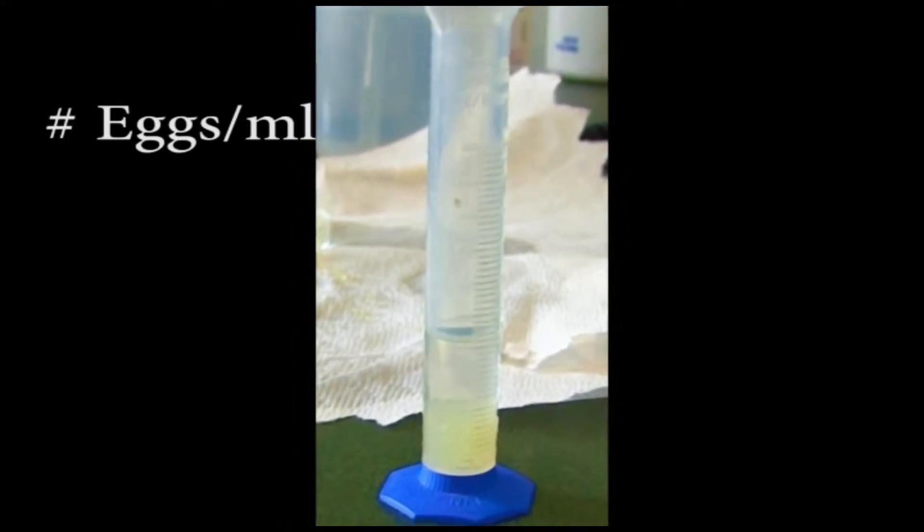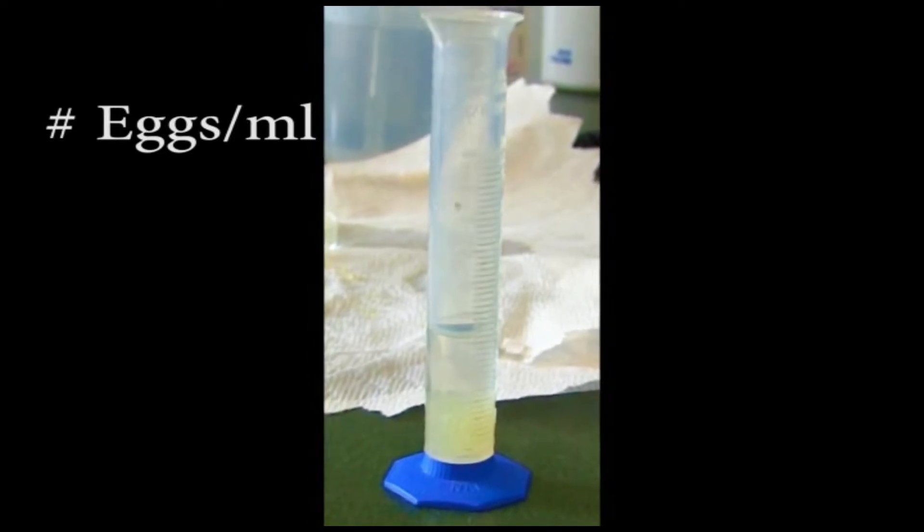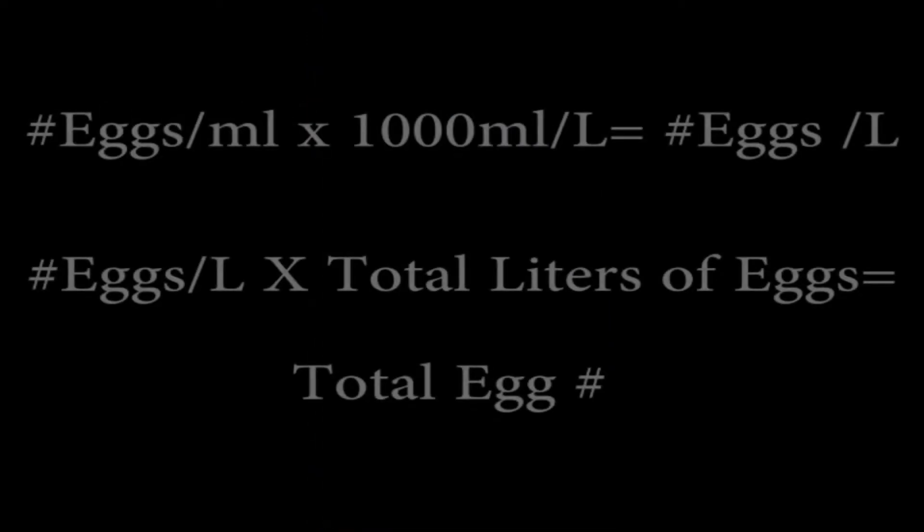Using this number and our total egg volume determined earlier, we can calculate total numbers of eggs using the following equation.